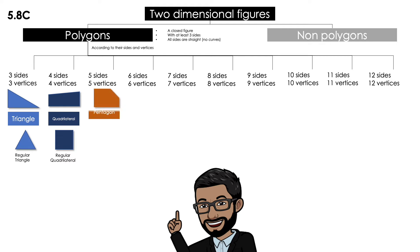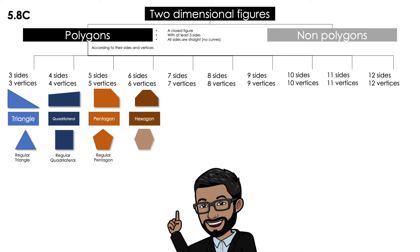If it has five sides and five vertices, it's a pentagon. If all the sides of the pentagon are congruent, it's a regular pentagon. If it has six sides and six vertices, it's a hexagon. If all of the sides of the hexagon are congruent, it's a regular hexagon.